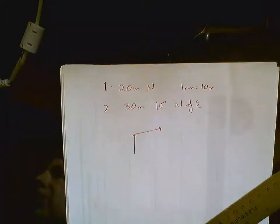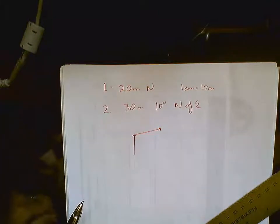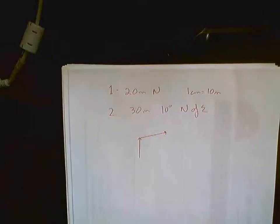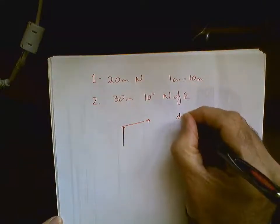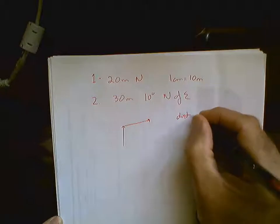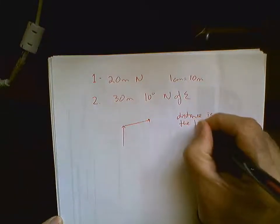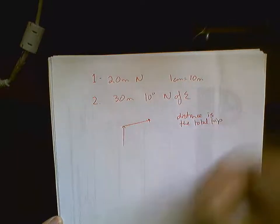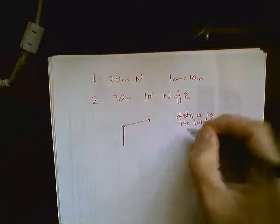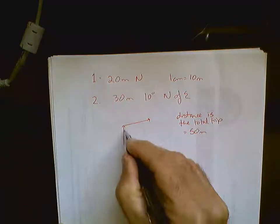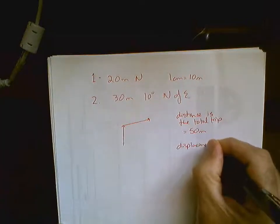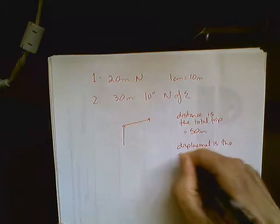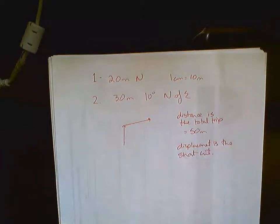Now, what you can do with these vectors is they can be additive. In other words, if you add these two together, you can get your total displacement. Now, I want to talk about distance and displacement. You should have covered this in grade 11. Distance is the total trip. So, the distance is 50 meters. We went 20 meters and then we went 30 meters. Displacement is the shortcut. So, it's the quickest route.